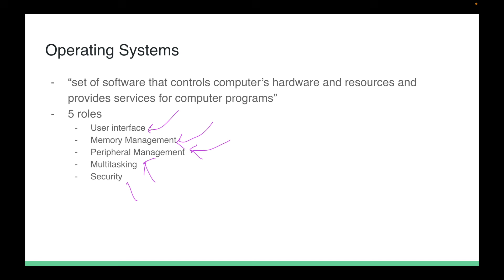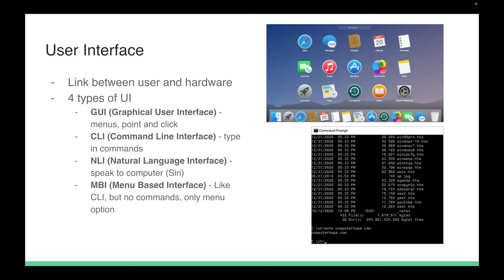The user interface is the link between user and hardware. This is an example of a graphical user interface (GUI). We can also have a command line interface (CLI), which some Linux systems use exclusively. We could have a natural language interface like Siri, and a menu-based interface which you might see on a Game Boy. On Mac the CLI is the terminal app; on Windows it's the command prompt.